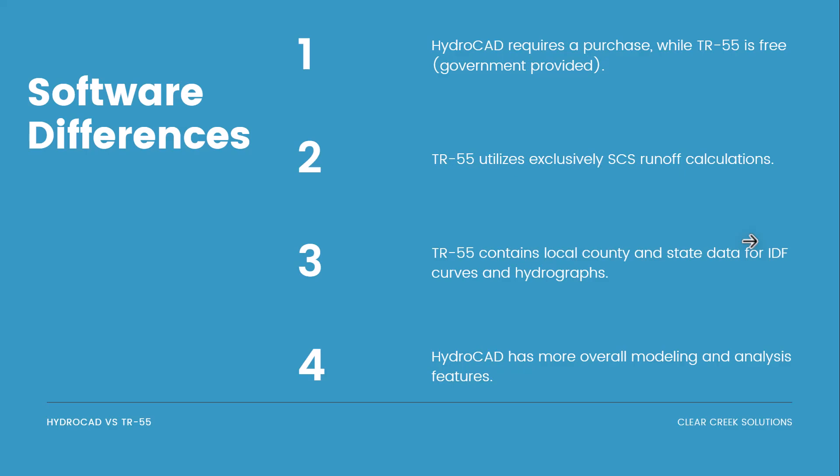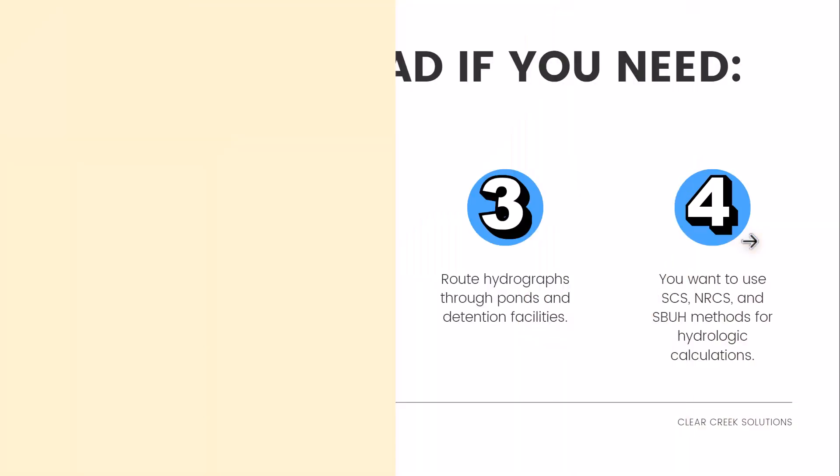What are some of the differences? HydroCAD requires a purchase, while TR55 is free and government provided. TR55 utilizes exclusively the SCS runoff calculations. TR55 contains local county and state data for IDF curves and hydrographs, while HydroCAD has more overall modeling and analysis features for a more in-depth model.